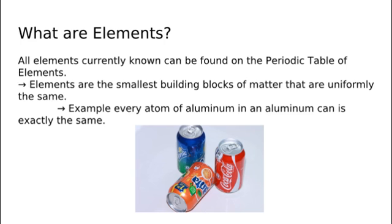Elements are the smallest building blocks of matter that are uniformly the same. For example, every atom of aluminum in an aluminum can is exactly the same. Break that atom apart and the parts that make it up are different from each other.